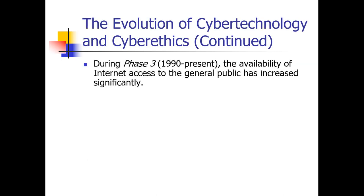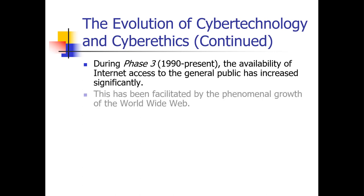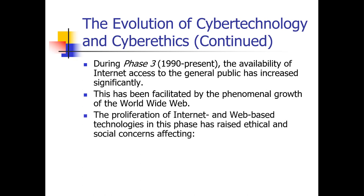Phase three is essentially the 90s to the present, and that deals with the availability of internet access to the general public and how it increases — both individual access and speed of access. This has been facilitated by the phenomenal growth of the internet and the worldwide web. The proliferation of internet and web-based technologies in this phase has raised its own ethical and social concerns: free speech, anonymity, and jurisdiction — those are the big ones. Free speech concerns, especially as we've grown to use social media and the internet, have definitely increased.